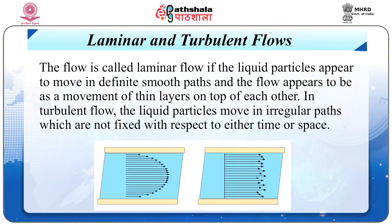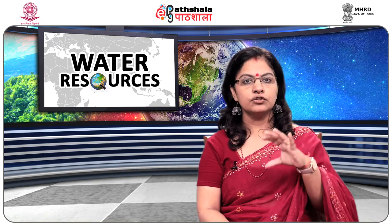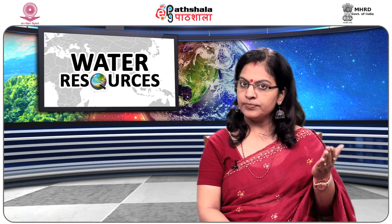Laminar and turbulent flow: the flow is called laminar if the liquid particles appear to move in a definite smooth path, and the flow appears as a movement of thin layers on top of each other. In turbulent flow, the liquid particles move in irregular paths, not fixed with respect to either time or space. The relative magnitude of viscous and inertial forces determines whether the flow is laminar or turbulent.